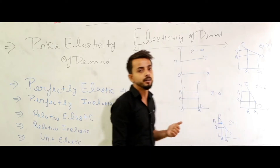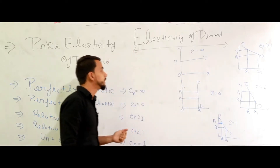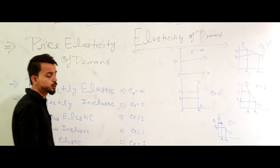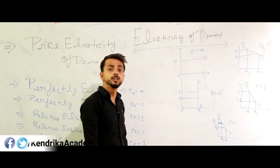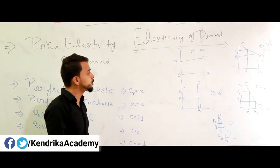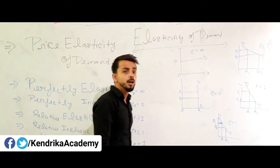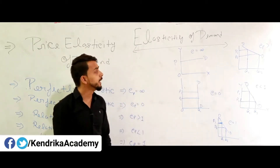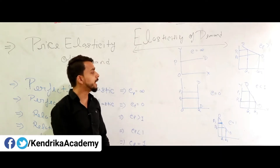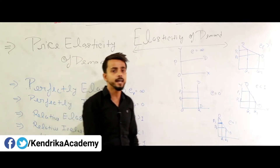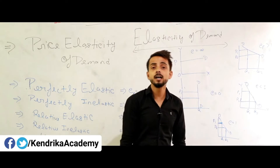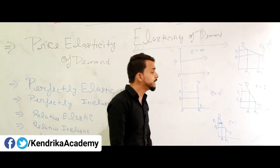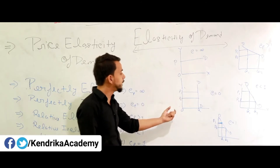The second type is perfectly inelastic demand, where ep equals zero. What is ep equals zero? If there is a large or wide change in price but demand does not reflect in that direction, it means there is perfectly inelastic demand.